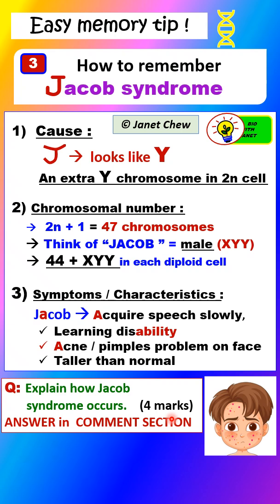Now the question is: explain how Jacob Syndrome occurs. You can try this question yourself and then refer to the answer in the comment section. This is an important question for the exam.